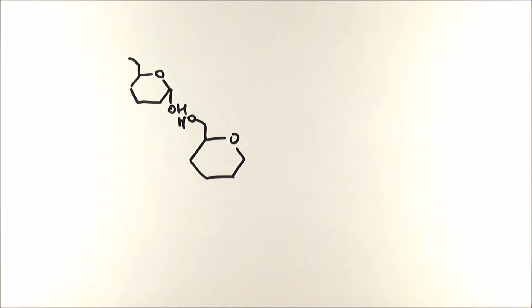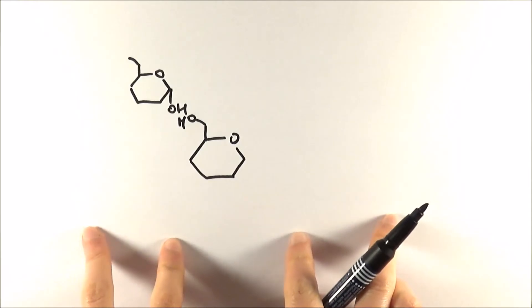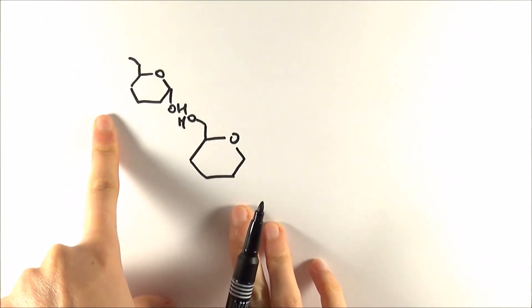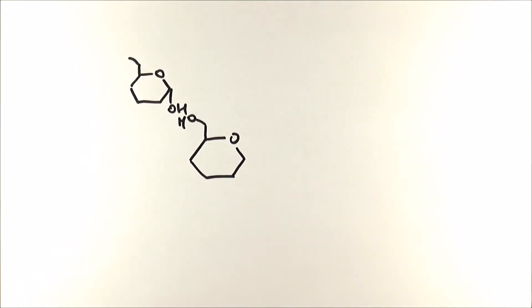Now again I've only drawn the hydroxy groups that are involved in this case. Now compared to before when you have the two alpha glucose molecules sitting next to each other, this time we have one here and the other one that's kind of diagonally placed. But even though they are placed slightly differently it's the same concept.